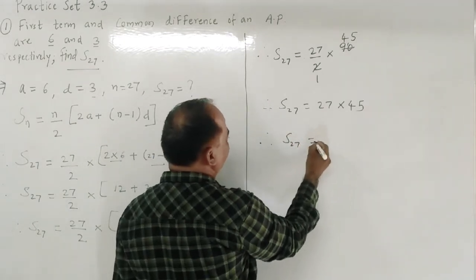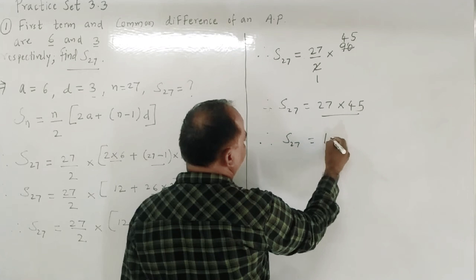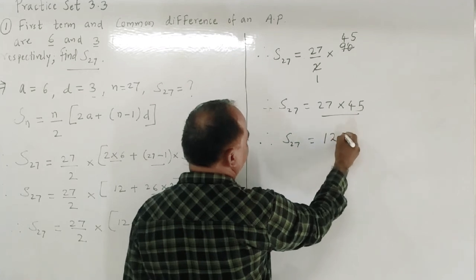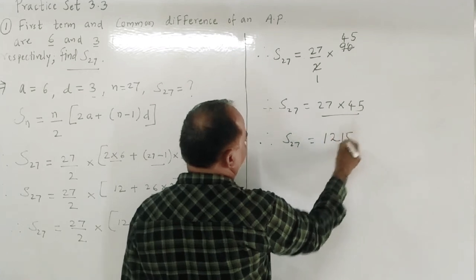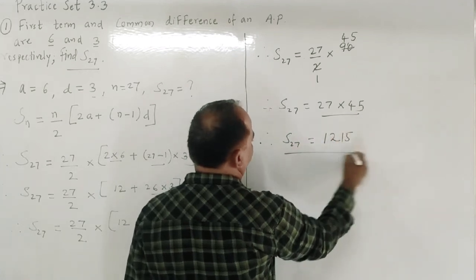Multiplying 27 × 45 gives 1215. Therefore S27 = 1215.